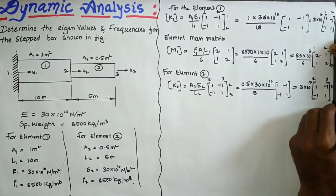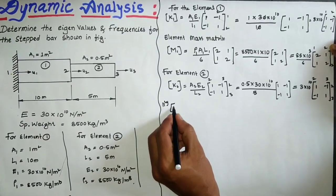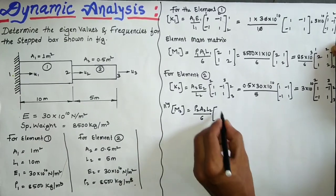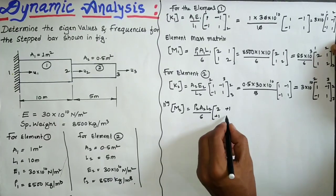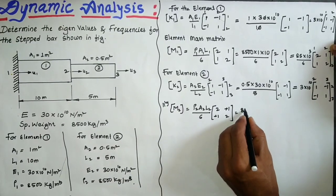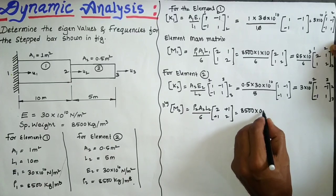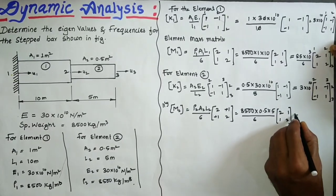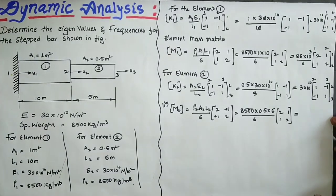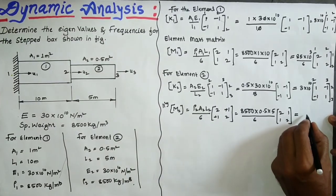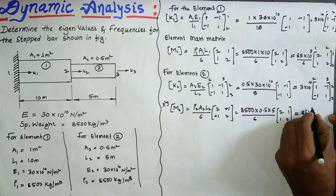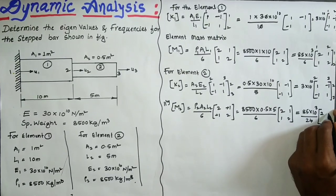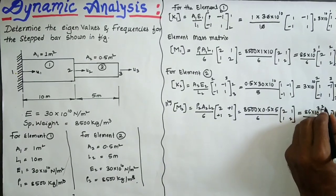Similarly, the element mass matrix M2 = (ρ2·A2·L2/6) × [2 1; 1 2]. Substituting ρ2 = 8500, A2 = 0.5, L2 = 5 m, divided by 6, we get M2 = (85×10³ × 0.5 / 24) × [2 1; 1 2], covering nodes 2 and 3.